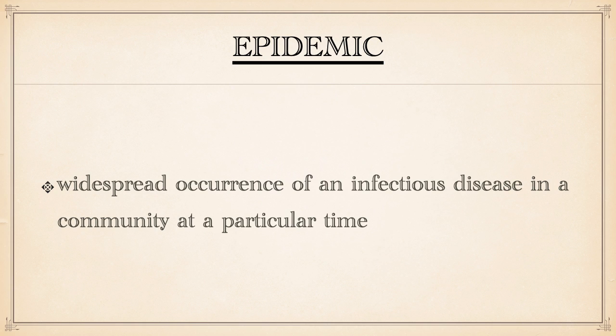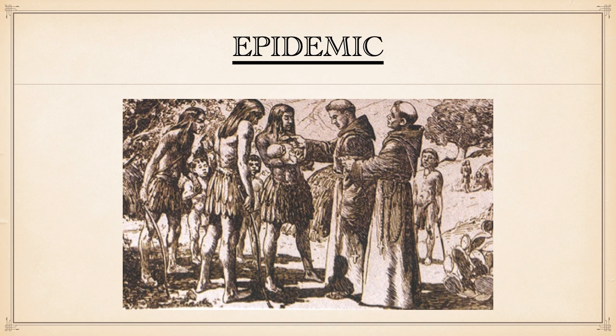The next term here is Epidemic. This is the widespread occurrence of an infectious disease in a community at a particular time. A lot of the Europeans were used to the disease, but in many cases the natives were not, resulting in deaths.